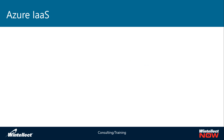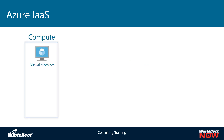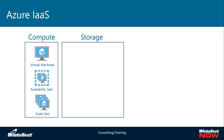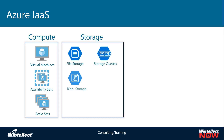With Azure IaaS we've looked at a number of things already. We've looked at compute pretty in-depth with virtual machines, availability sets, and scale sets. With storage we've looked at file storage, blob storage in depth, and disks as they relate to Azure VMs. We have not yet looked at storage queues or table storage.